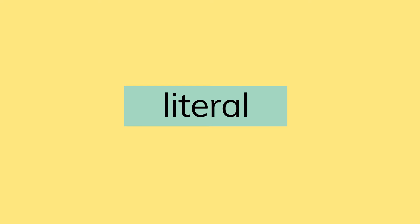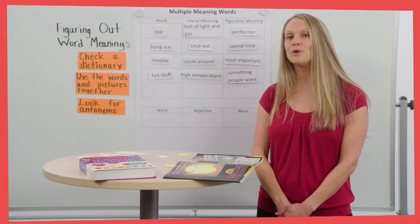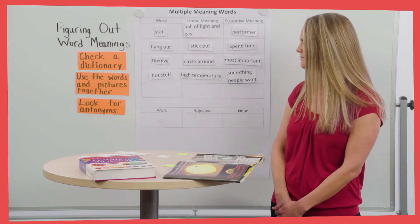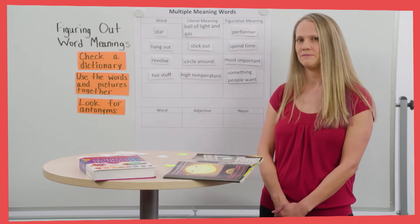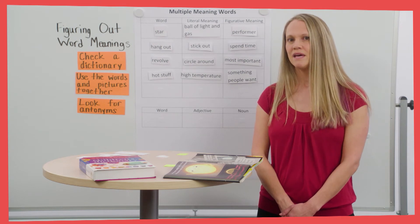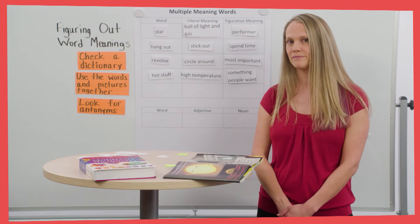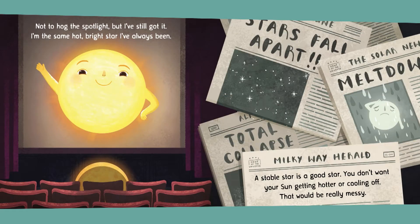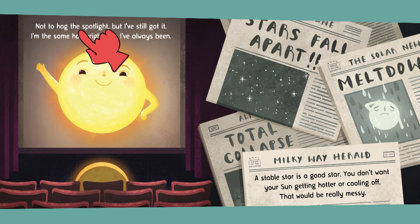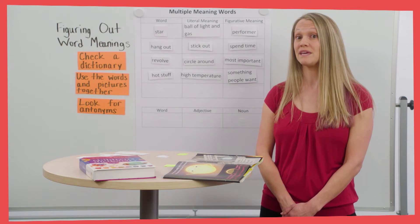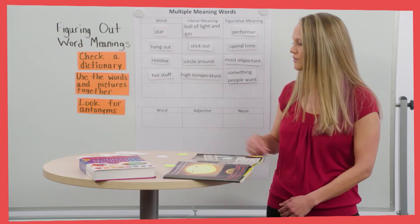But it also has a figurative meaning, and the author uses hog figuratively in her book. Which strategy should we try to figure out its meaning? Let's try to use the text and pictures together to figure it out. I'm noticing that the sun is the only one on stage, so it's getting all the attention, and it says it's hogging the spotlight — no one else is in it. So when you figuratively hog something, it means you're taking most or all of it and not leaving much for others.